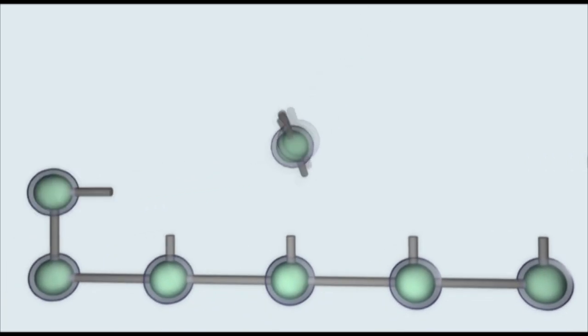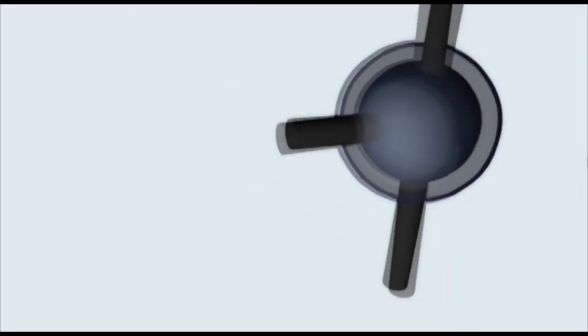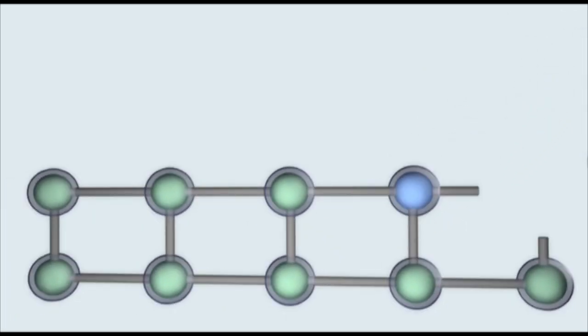However, each of the four buffer solutions also contains a dideoxyribonucleotide which stops the chain from being rebuilt any further. The result is a collection of DNA strands each as long as it was allowed to grow until randomly encountering a dideoxyribonucleotide.